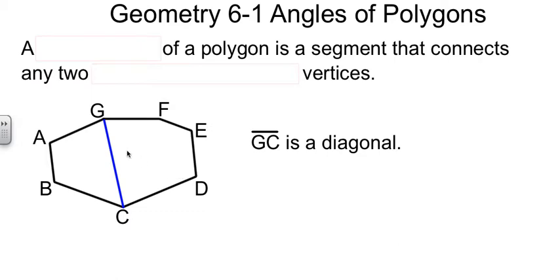The first idea for polygons that we need to talk about is the diagonal of a polygon. It's a segment that connects two non-consecutive vertices. Consecutive vertices would be like G, F. They're next to each other in the polygon. Non-consecutive would be like G and D, or G and C, where you have to go through the inside of the polygon to get to it.